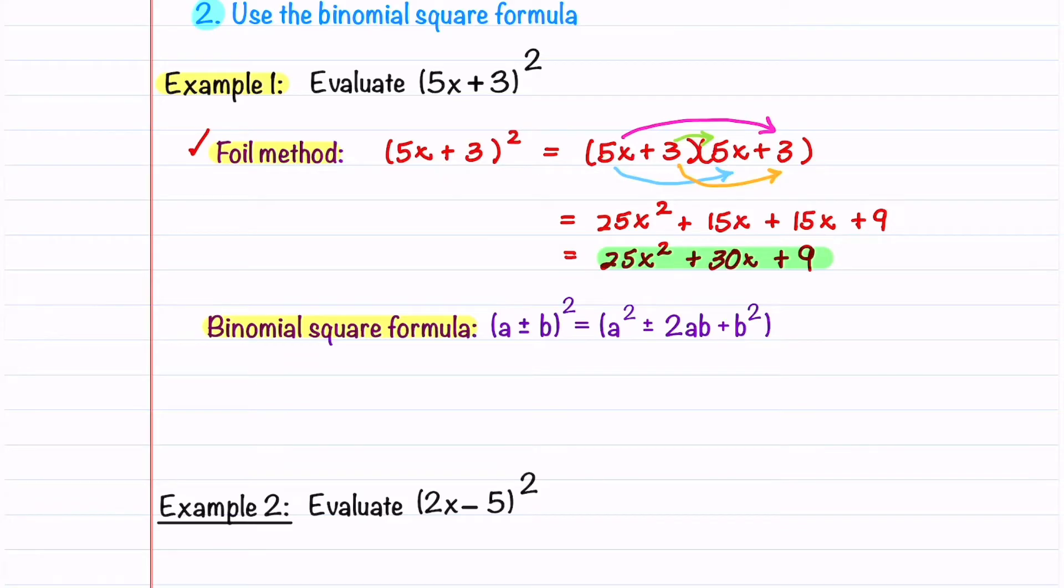Let's now look at the three terms that we have in our answer. The first term is 25x² and that is just 5x times 5x. The second term is 5x times 3 doubled, which is 30x. And our last term is 3 squared.